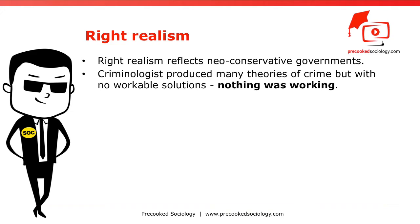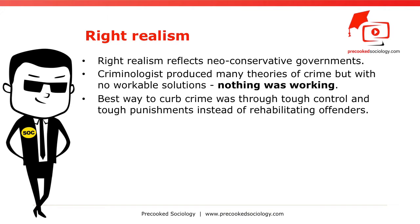As such, policy makers argued that nothing was working. The result, both in the UK and the United States, was the view that the best way to curb crime was through tough control and tough punishments, instead of rehabilitating offenders or tackling the causes of crime, like poverty.